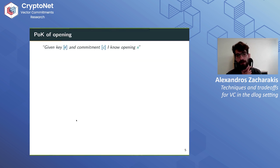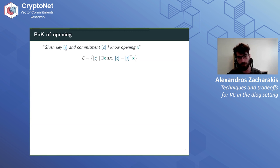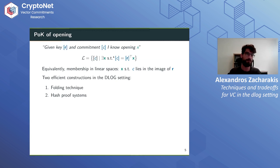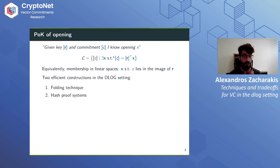The final thing we need is a proof of knowledge of opening of an algebraic commitment. If we have a commitment key and some commitment, somebody convinces us that they know an opening of this commitment with respect to this key. The language contains all commitments such that the witness is the opening consistent with this commitment. You can see this as membership in linear spaces — a prover shows it knows coefficients X that can produce a linear combination of the commitment key to derive the commitment. Here, when I say efficient, I mean sublinear proof size.